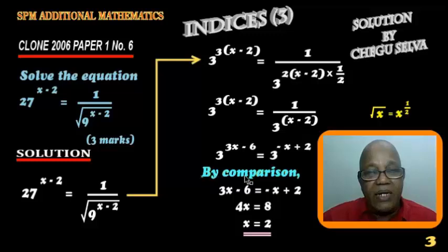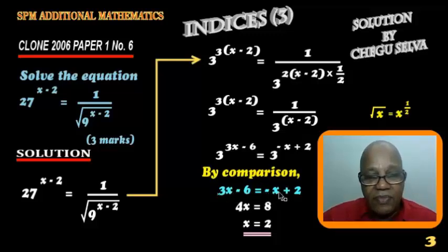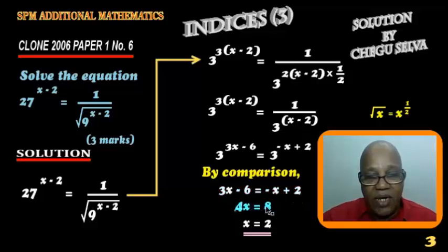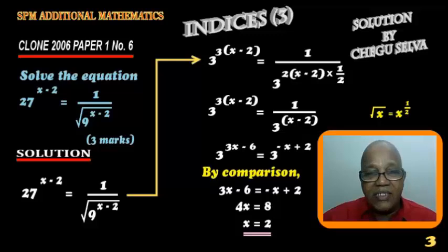Now, by comparison, this power is equal to this power. Three X minus six equals negative X plus two. So we get four X equals eight. Therefore, X is equal to two. As simple as that.